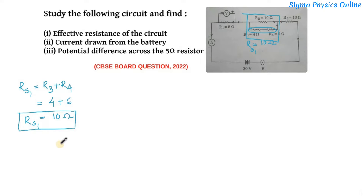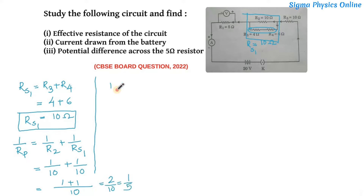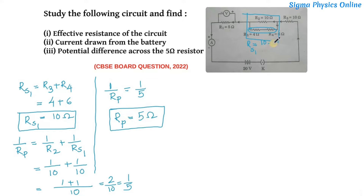Now let's solve the branched part. Since resistor RS1 and R2 are in parallel, we solve for parallel circuit resistance: 1 by Rp equals 1 by R2 plus 1 by RS1. R2 is given as 10 ohm and RS1 is also 10 ohm. The LCM is 10, so it is 2 by 10, which is 1 by 5. Therefore, the effective resistance in parallel Rp is 5 ohm.